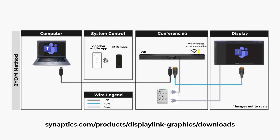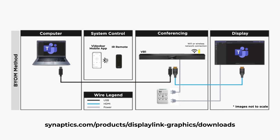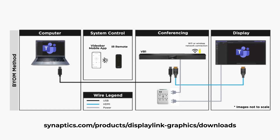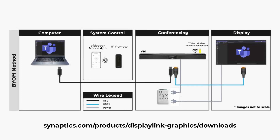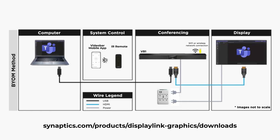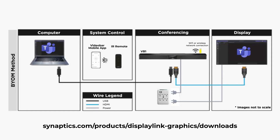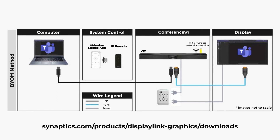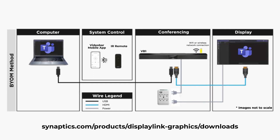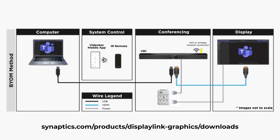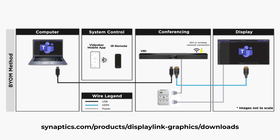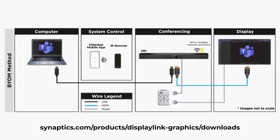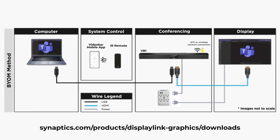If you're using a VB1, it supports DisplayLink pass-through, meaning it can transfer the video from your computer to the in-room display without having to connect an HDMI cable between your computer and display. Just be sure to visit the link on the screen to download and install DisplayLink drivers on your computer.